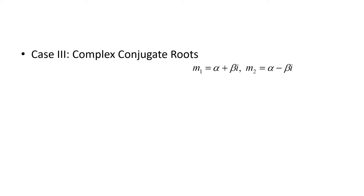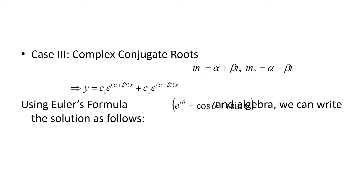The third case is when we come up with complex conjugate roots, so we get m1 equals alpha plus or minus beta times i. If we plug those into the general solution and manipulate using Euler's formula — e to the i theta equals cosine of theta plus i sine theta — and a little algebra, we can rewrite the solutions as y equals e to the alpha x times c1 cosine of beta x plus c2 sine of beta x.